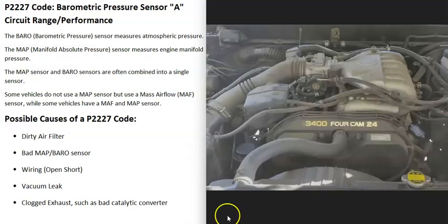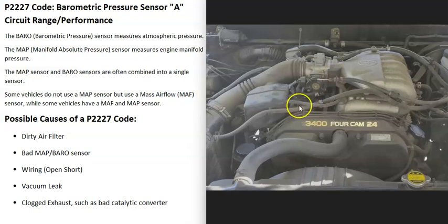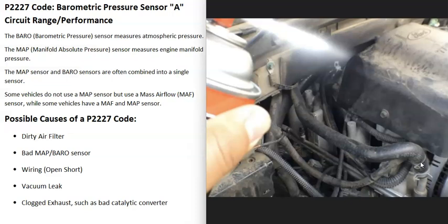Another possible cause is a vacuum leak. All the air going into the engine should pass through the throttle body, but if there's a leak — like a loose hose or bad gasket — air gets in around the throttle body and can throw everything off. One testing method is to start the engine and spray starter fluid around suspected leak areas; if the idle changes, you've found the leak.